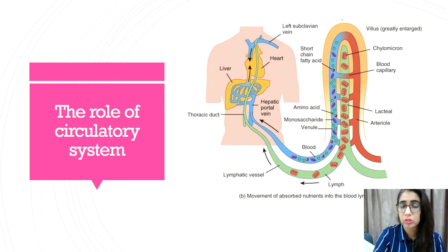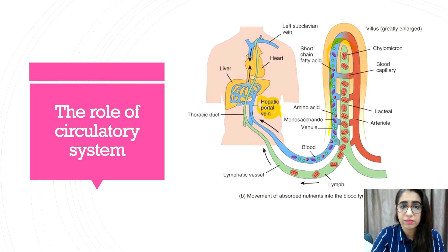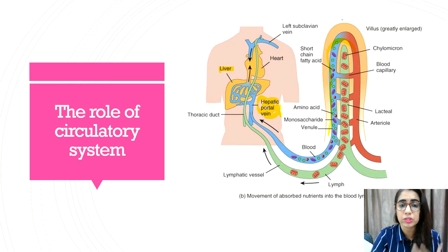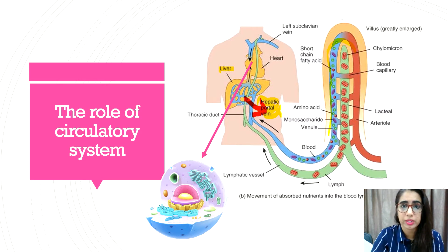From the previous lesson, you know that water-soluble nutrients such as monosaccharides, amino acids, vitamins B and C, and minerals enter the blood capillary network of the villi and are channeled through the hepatic portal vein. As shown in the picture, they are channeled through the hepatic portal vein here and carried into the liver. The liver will process all nutrients before distributing them to the body cells to be assimilated. Nutrients from the blood capillaries of the liver channel through the hepatic portal vein, then into the vena cava of the heart to be distributed to all parts of the body.